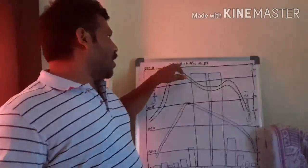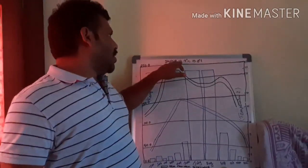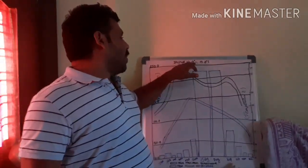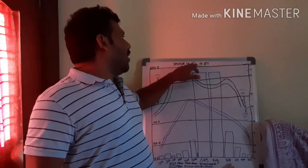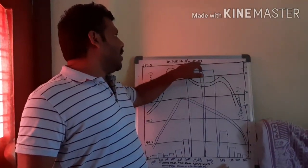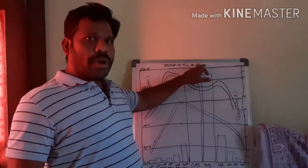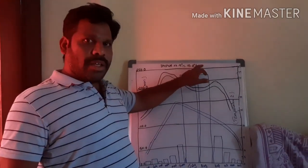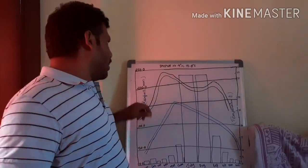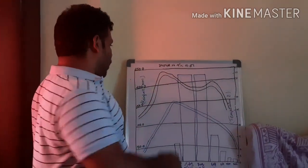We have taken the place of Jaipur. The location of Jaipur is 26 degrees 9 minutes north latitude and 75.8 degrees east longitude. It is the capital of Rajasthan.